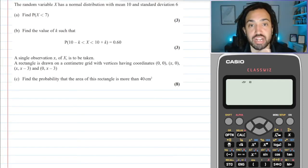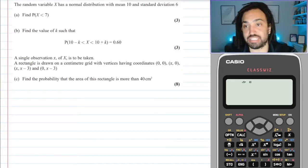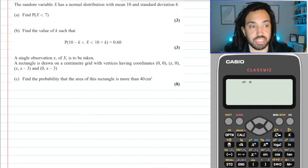Okay, what we've got here: the random variable X has a normal distribution with mean 10 and standard deviation 6. Find the probability that X is less than 7.